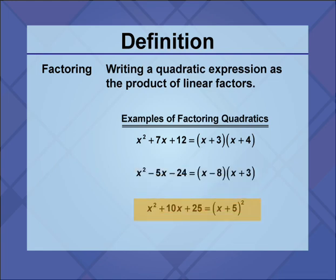The quadratic trinomial x squared plus 10x plus 25 can be factored as a perfect square, or the square of the linear binomial x plus 5.